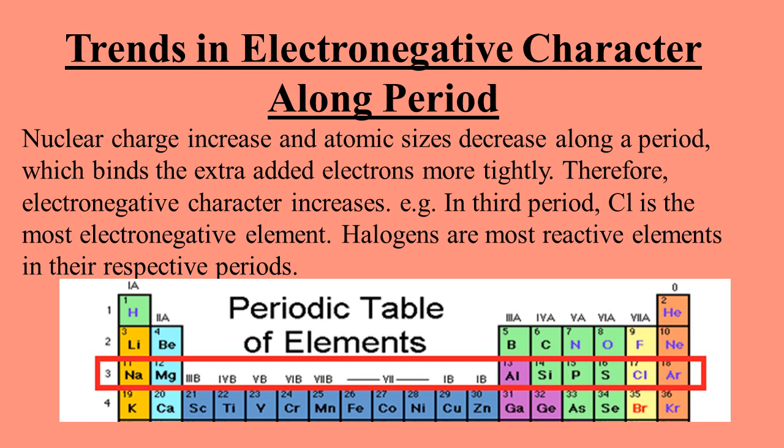In the third period, sodium is least electronegative while chlorine is most electronegative; argon is not reactive. In all periods, halogens are the most reactive elements. In the second period fluorine is most active; in the third period chlorine is most active; in the fourth period bromine is most active. All halogens are the most electronegative elements along their respective periods.